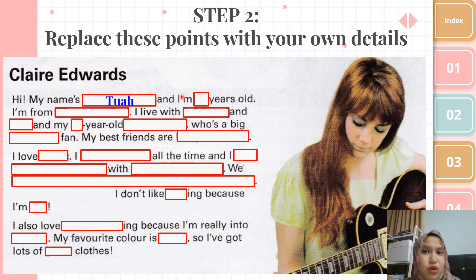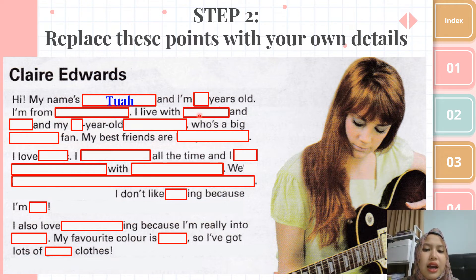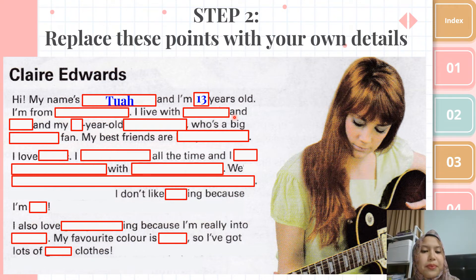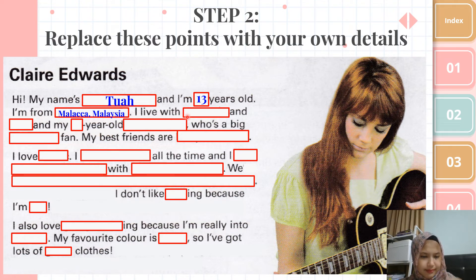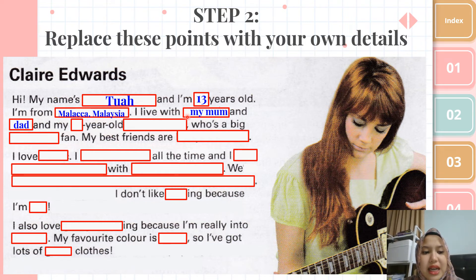Let's look at the example. This person's name is Tua. So write 'My name is Tua.' If your name is Alia, write Alia; if it's Jackson, write Jackson. And then your age — 'I'm 13 years old.' If you're 13, write 13. Then, 'I am from Melaka, Malaysia.' Write your state: if you're in Johor, then Johor; if Kelantan, then Kelantan. Then 'I live with my mom and dad and my 17-year-old brother, Jabal.'